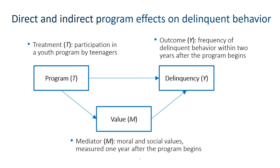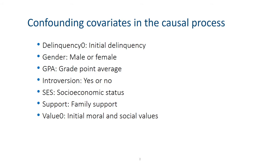Let me now demonstrate how you can use the causal med procedure to estimate direct and indirect causal effects. In the youth program example, teenagers enter the youth program voluntarily. After one year, their moral and social values were measured by a psychological scale, and their delinquent behavior within two years after the program began was recorded. Several individual characteristics that might serve as confounding covariates were also measured. These include initial delinquency of the subjects, their gender, their grade point average for measuring academic performance, whether they were introverted or extroverted, their socioeconomic status (either high, medium, or low), their family support on a four-point scale, and their initial moral and social values. These are all important confounding covariates that need to be controlled for in the causal mediation analysis.